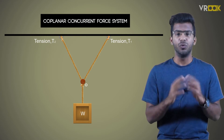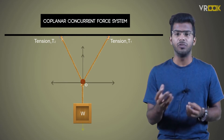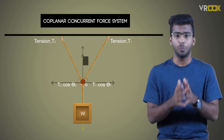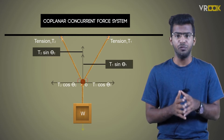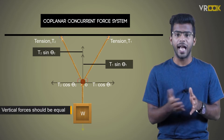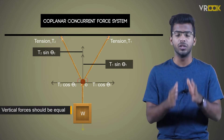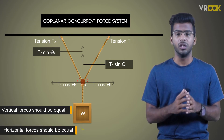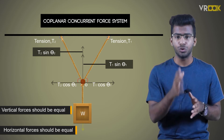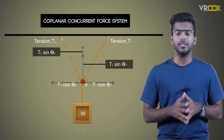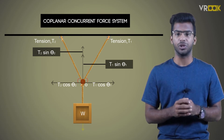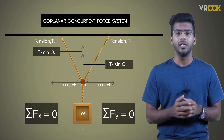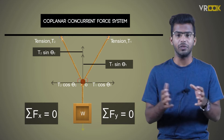Here the forces can be resolved into horizontal and vertical force components. For this system to be in equilibrium, vertical forces acting upwards and downwards should be equal, and the horizontal forces acting towards right or left should also be equal. These conditions are expressed as sigma Fx = 0 and sigma Fy = 0.